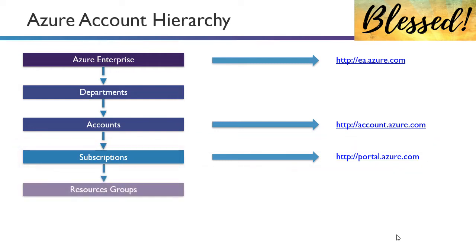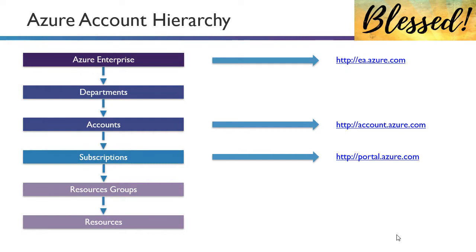Inside subscriptions, you can deploy resource groups, which are essentially containers for your resources. You can assign RBAC permissions to them — that's how we assign access — and within the resource groups, you have your actual resources. So there are multiple layers there.